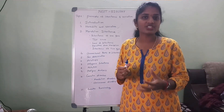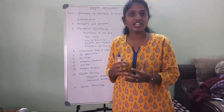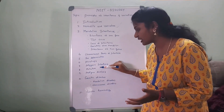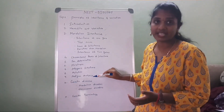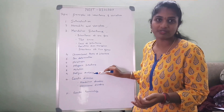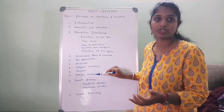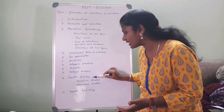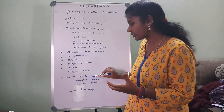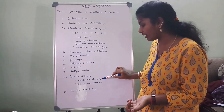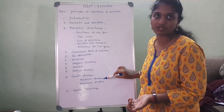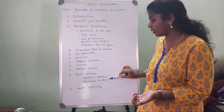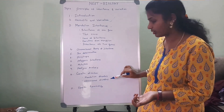Mutation is a sudden change in the genes which leads to a change in the phenotype — that comes under mutation. Pedigree analysis is nothing but tracing family history about dominant and recessive disorders. Next are genetic disorders. If a disorder is due to mutation, we call it a Mendelian disorder. If it is due to an abnormal number of chromosomes, we call it a chromosomal disorder.